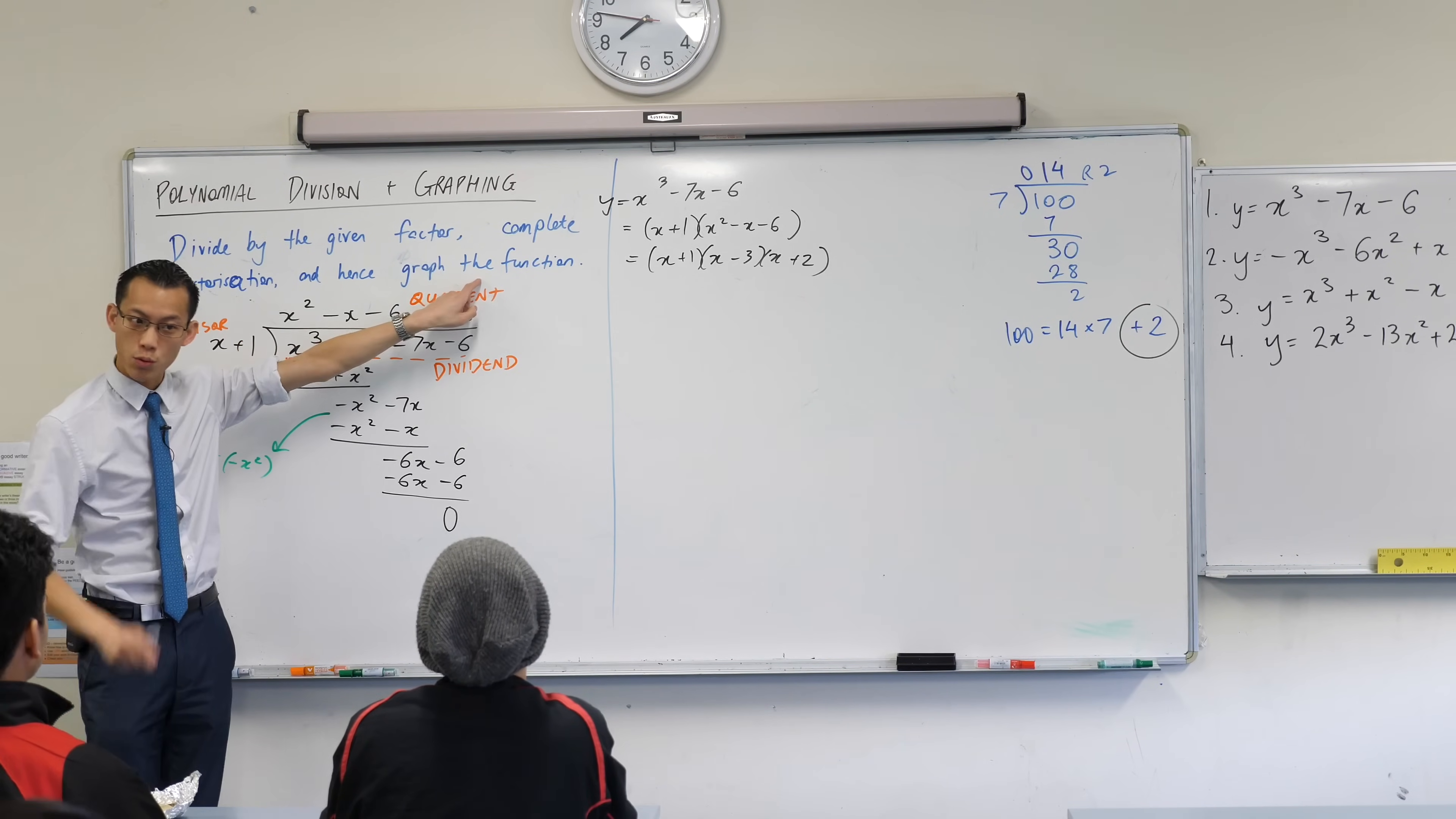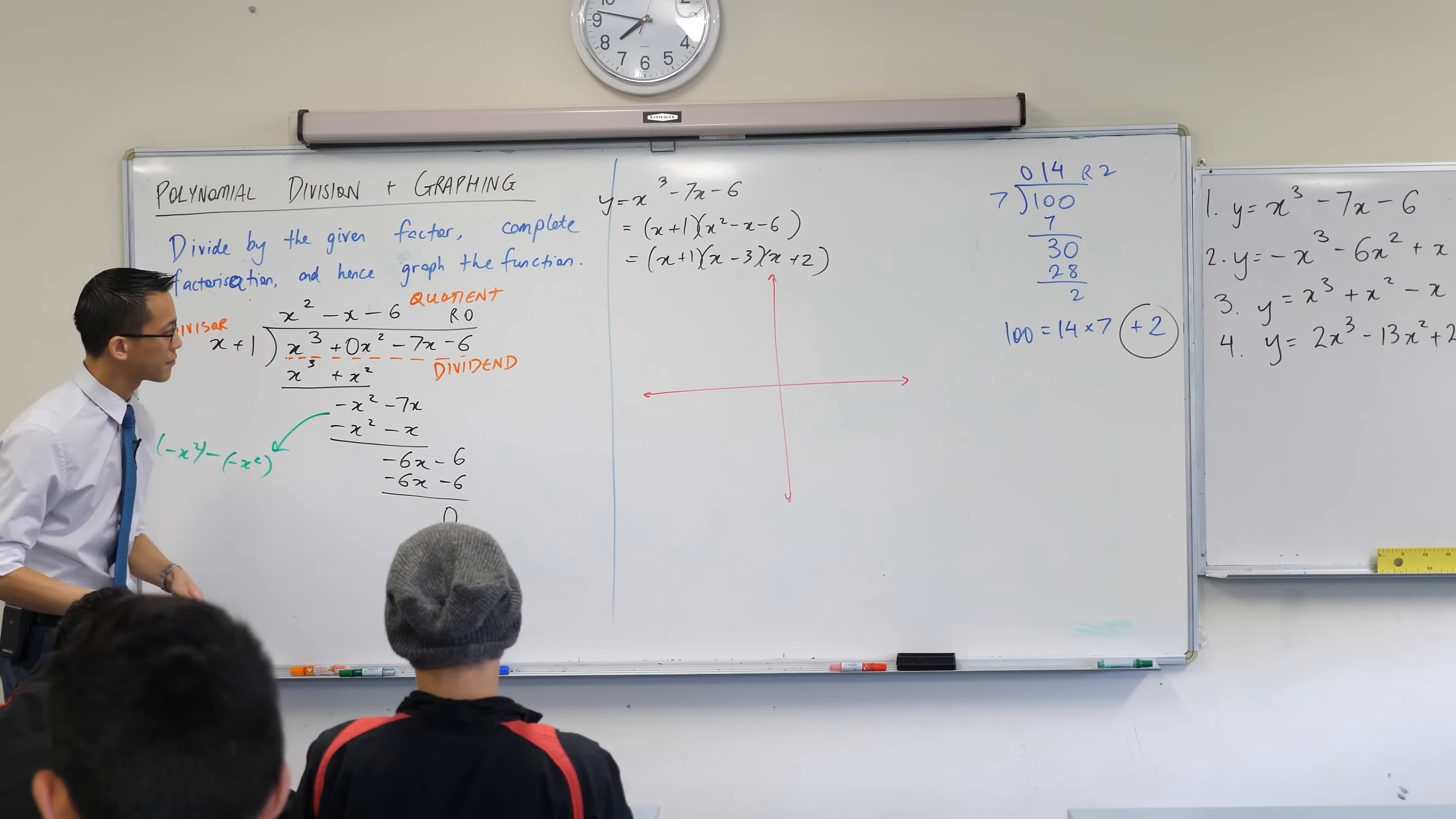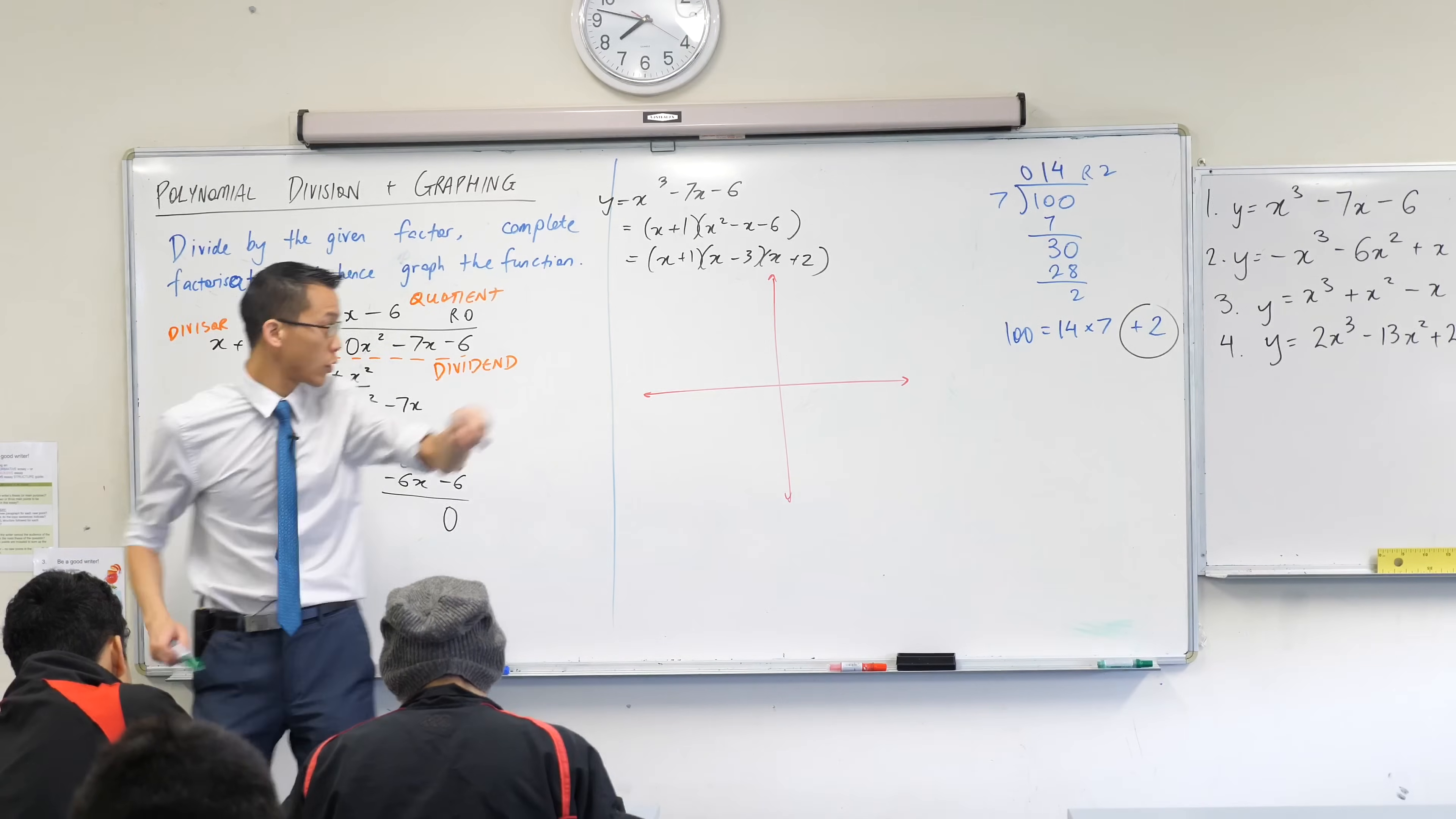So now we're ready to complete this. Would you please, underneath this, draw a set of axes for me? Now, what was the point of factorizing? Why is factorizing helpful if I'm trying to graph? What information is easy to read off the factorized form? Roots. Do you want to go ahead and tell me, Shanaf, what do you think the roots are?